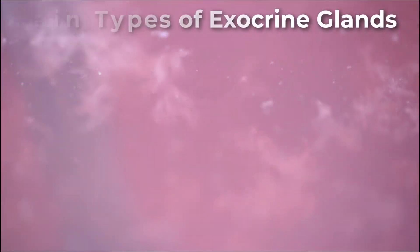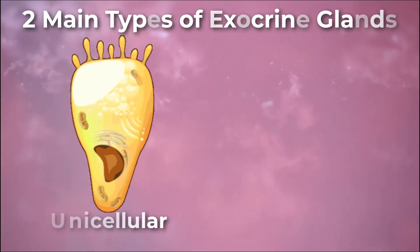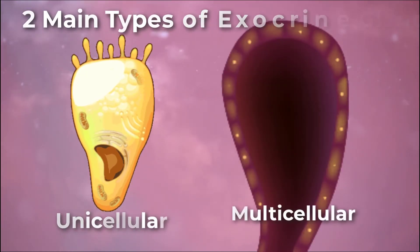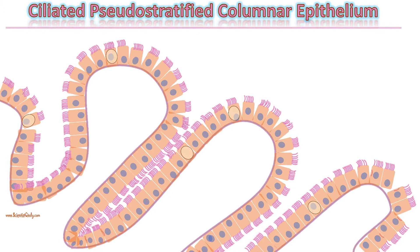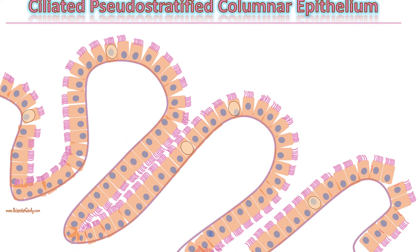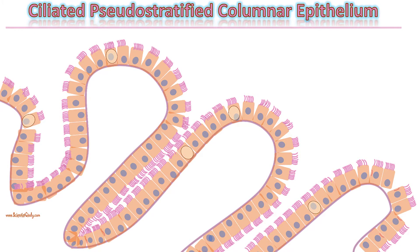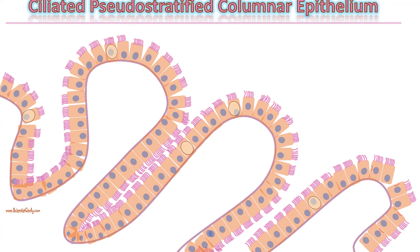Glandular structure. Exocrine glands are classified as either unicellular or multicellular. The unicellular glands are scattered single cells such as goblet cells found in the mucosa membranes of the small and large intestine.